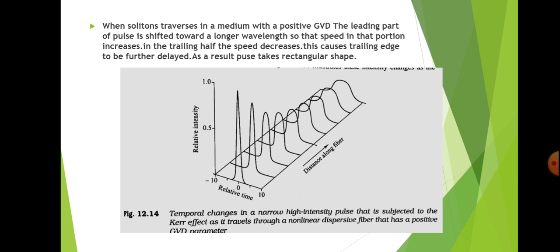Now analyzing the effect of frequency chirping and self-phase modulation versus group velocity dispersion in solitons: when a soliton traverses a medium with positive group velocity dispersion, the leading part of the pulse is shifted towards a longer wavelength so that the speed in that portion increases. Similarly, in the trailing half the speed decreases, causing the trailing edge to be further delayed.